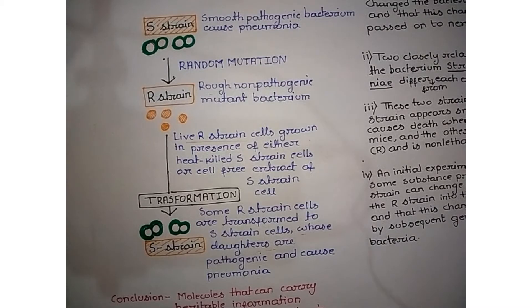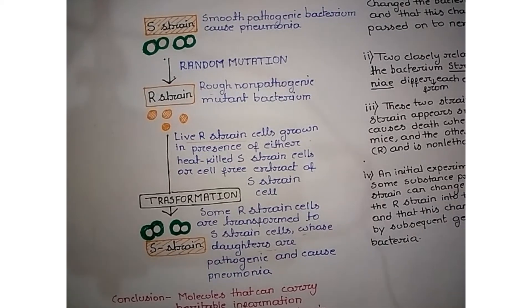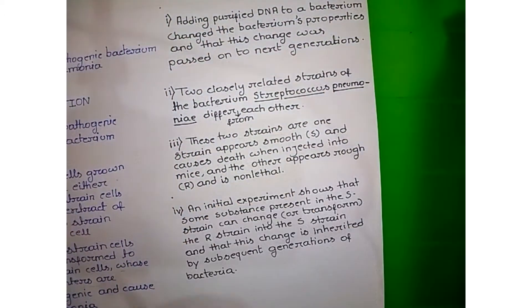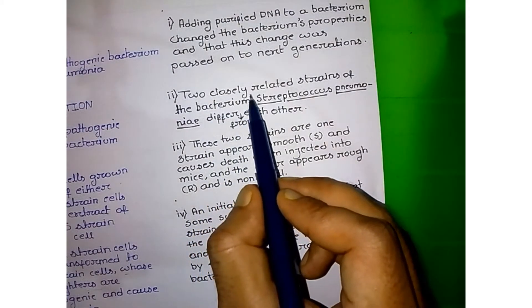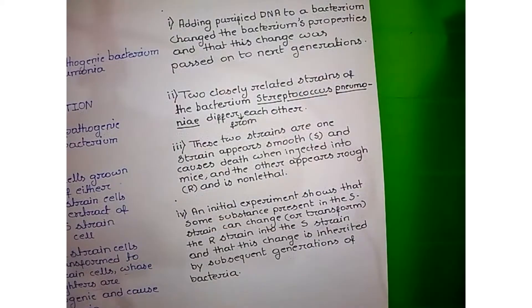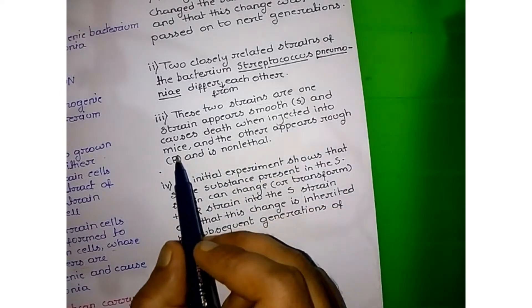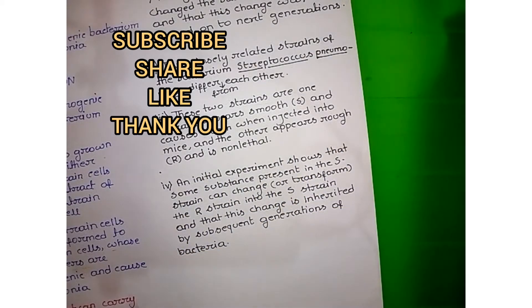DNA carries important information from one generation to the next. Here we discuss two important experiments that demonstrate this. First, we collect two strains of the same bacteria, Streptococcus pneumoniae. These two closely related strains differ from each other: one strain appears smooth and causes death when injected into mice, while the other appears rough and is non-lethal.